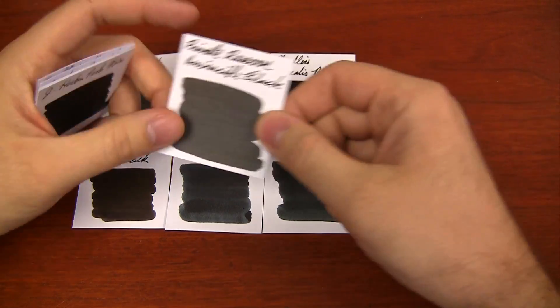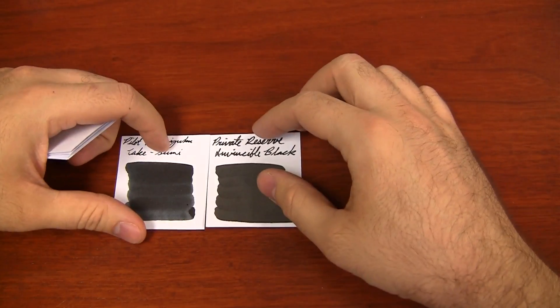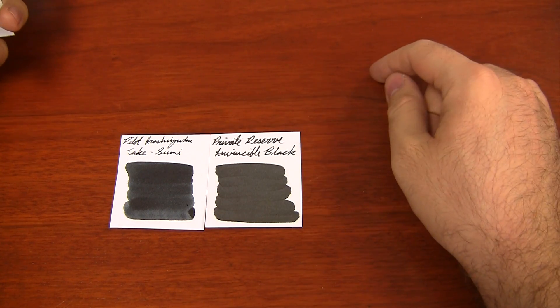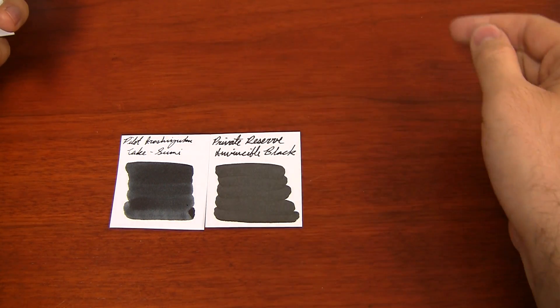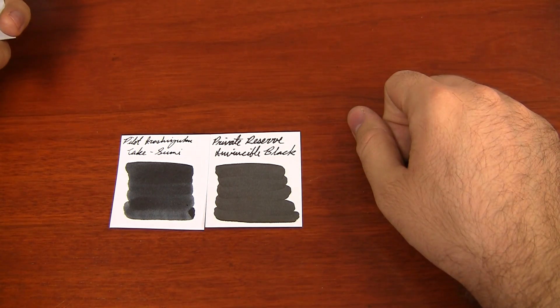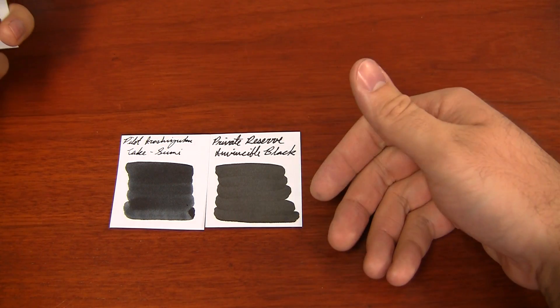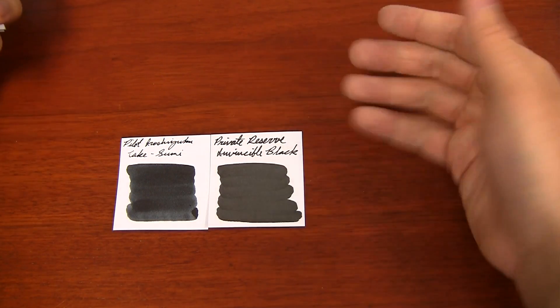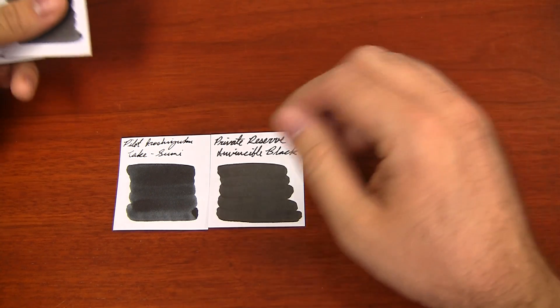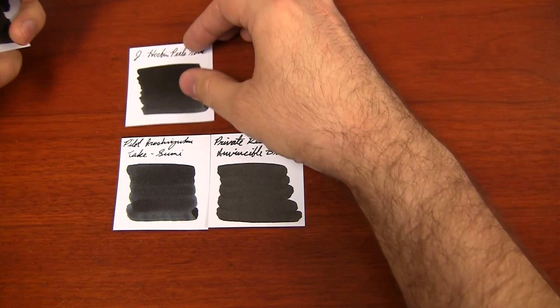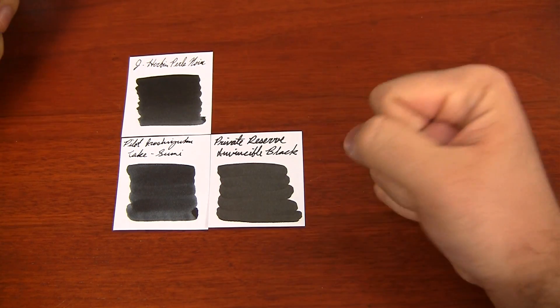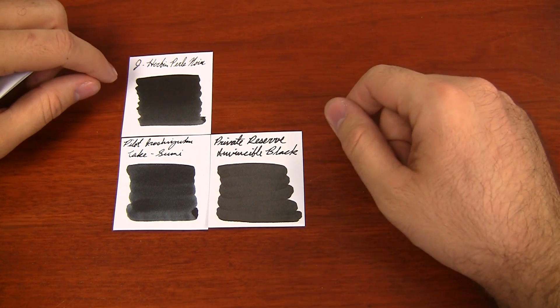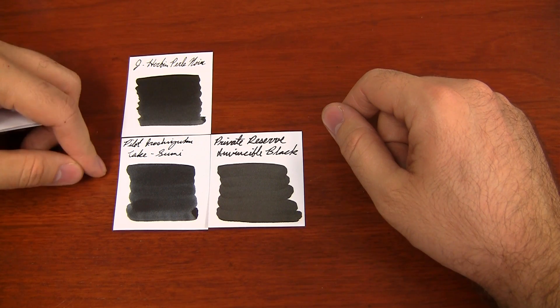Private Reserve Invincible Black is another one. Let me clear some of these off. Invincible Black, this is the reformulation of Invincible Black. It used to be super, super dark, really saturated. They reformulated it, and now it is not that anymore. It's really kind of gray looking and kind of flat. So it was kind of a bummer. But anyway, that's something to compare to. It was reformulated about a year ago as of the making this video. J. Herbin Pearl Noir is another fairly good staple black ink. That's J. Herbin's only black.